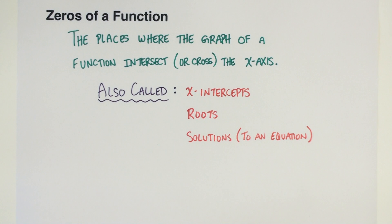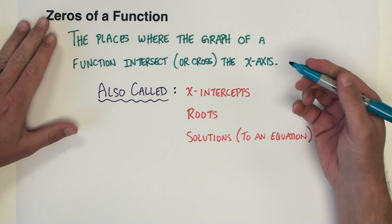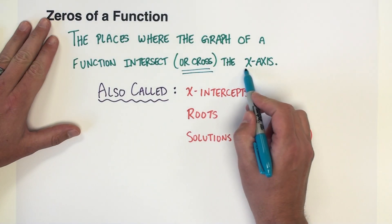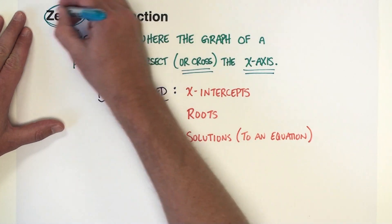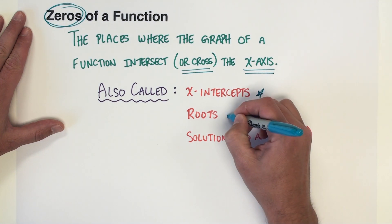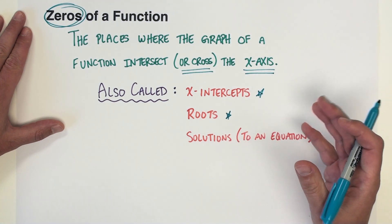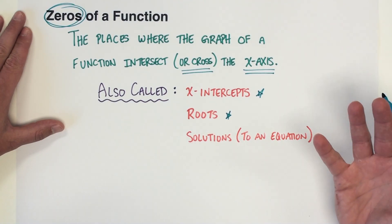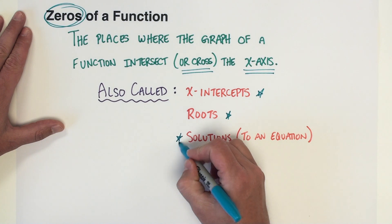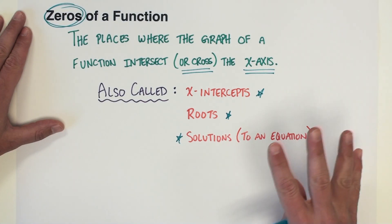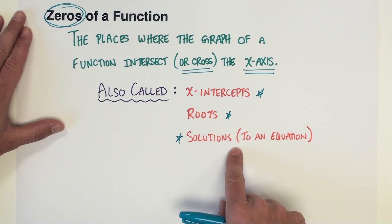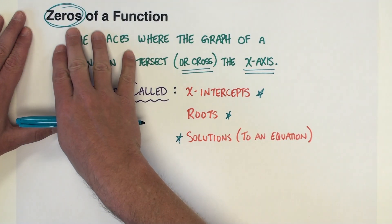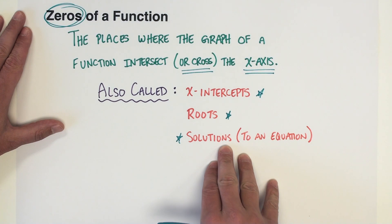When we are talking about the zeros of a quadratic function, we're only interested in the places where the graph crosses the x-axis. You can call those zeros, x-intercepts, or roots. And if we replace the function notation with a related equation, we can also call those solutions to an equation. We're going to primarily talk about solving equations, but at the heart of that problem, what we're really doing is finding zeros of the related function.